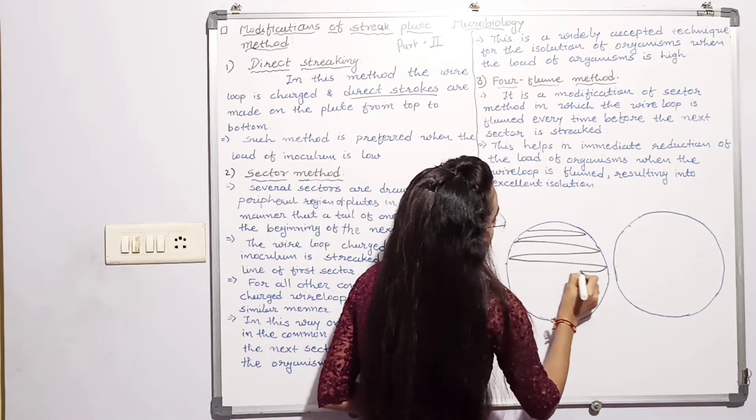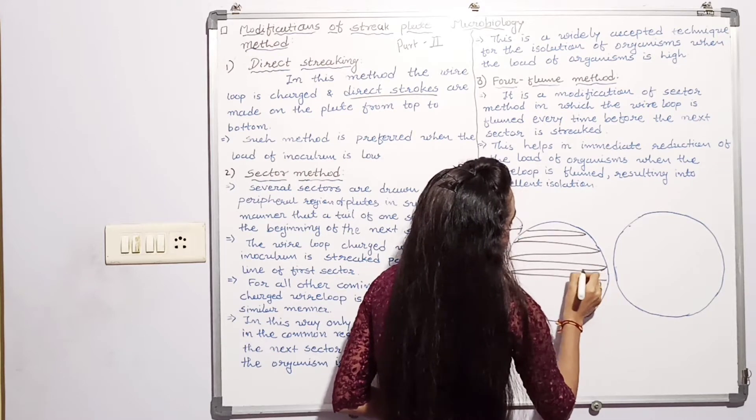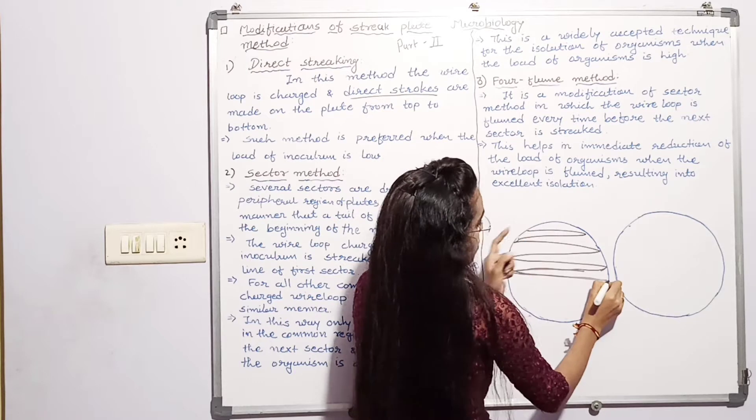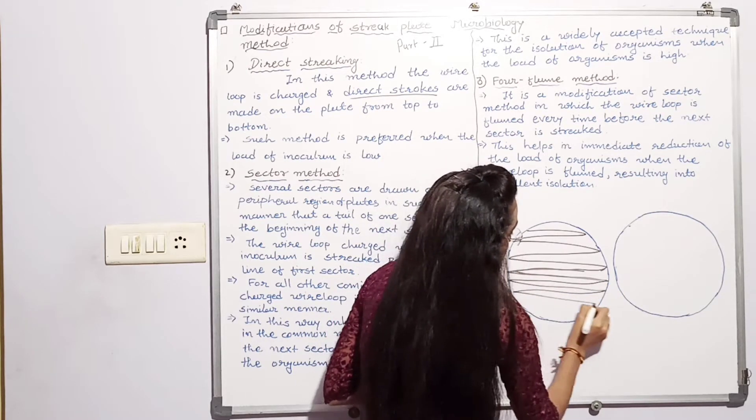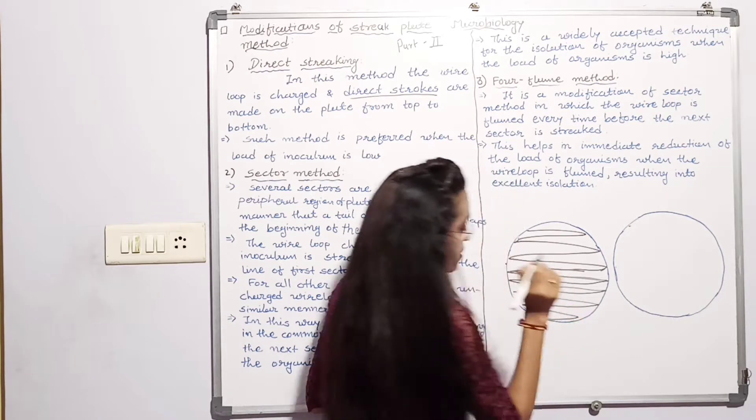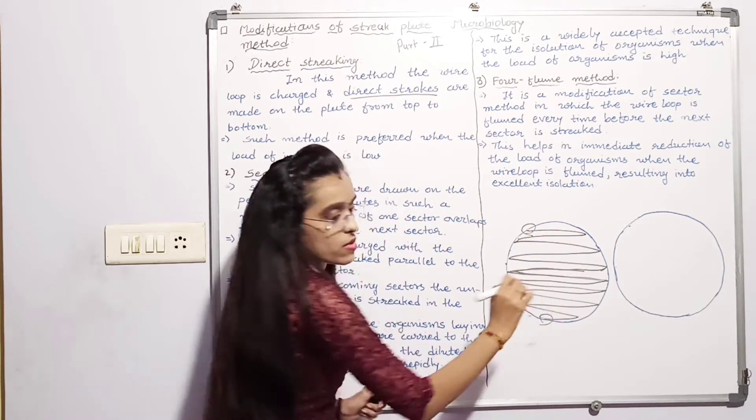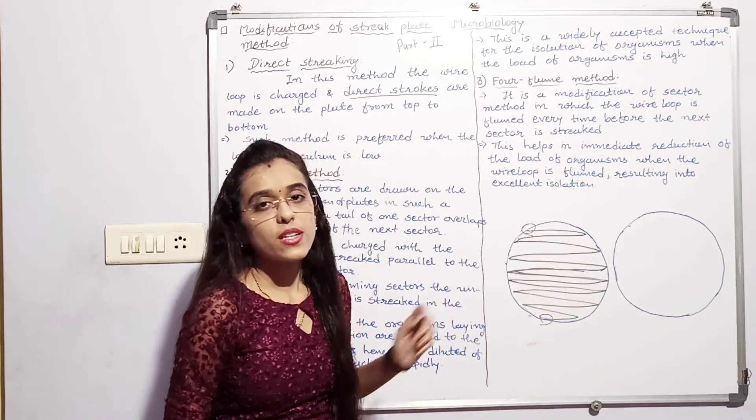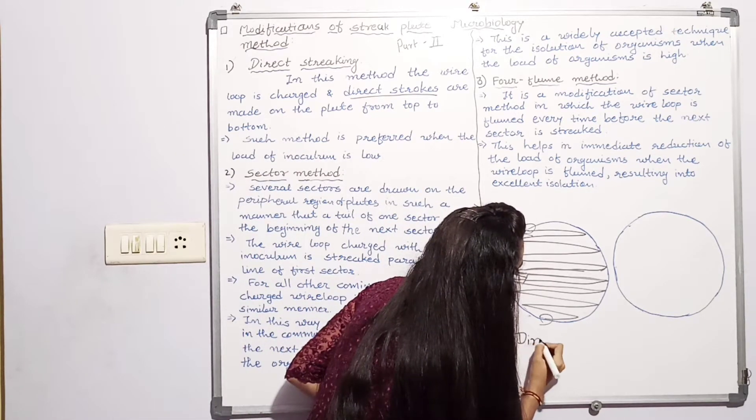It is start of, the stroke starts from one end region of plate to another. Start from this region at the end of this region. Whole plate is stripped by bacterial culture. That is called direct method.